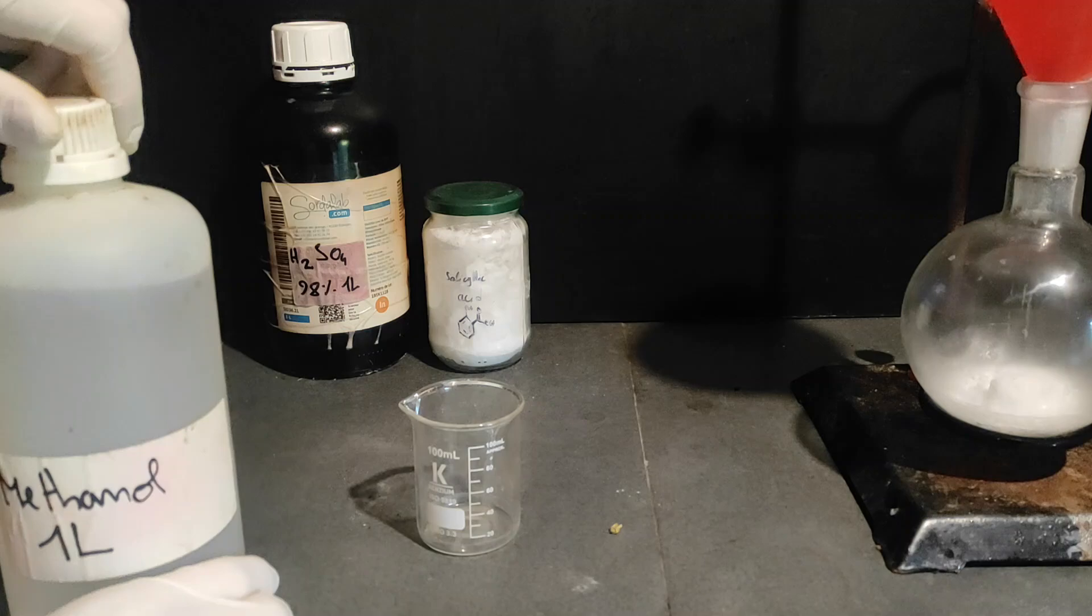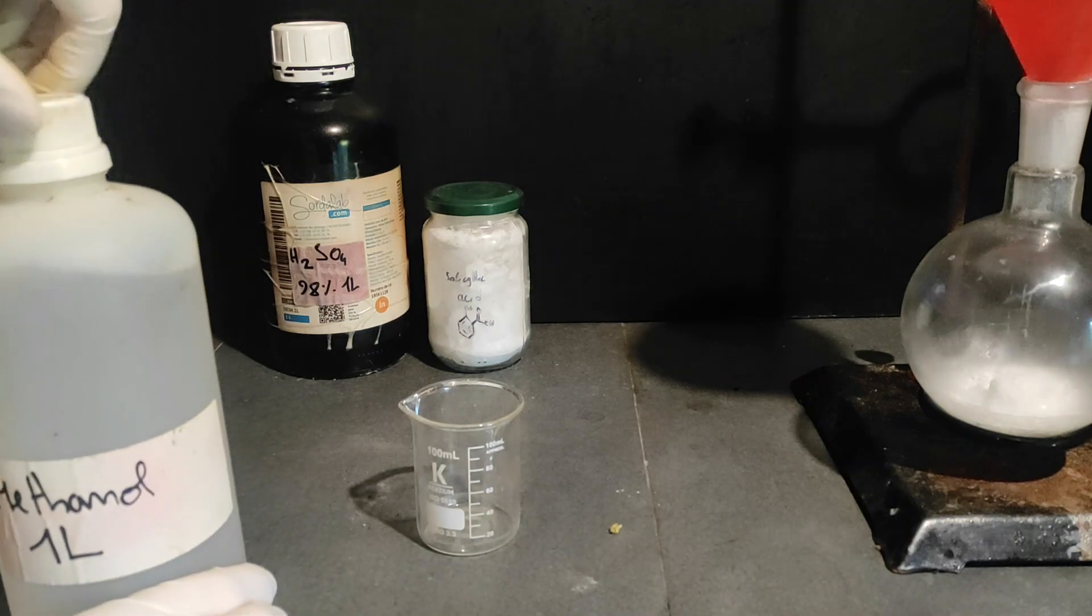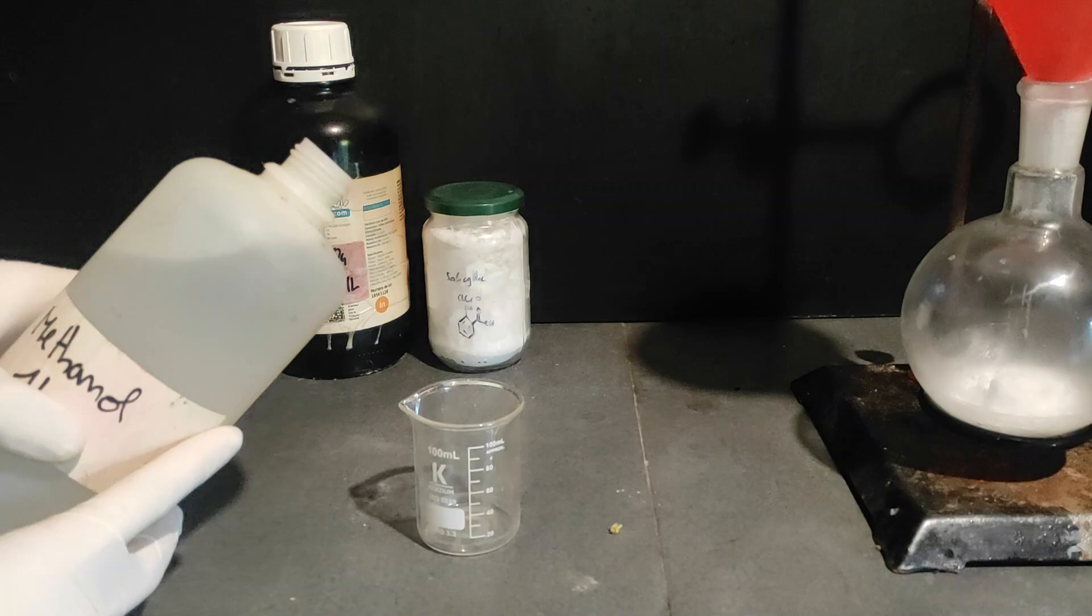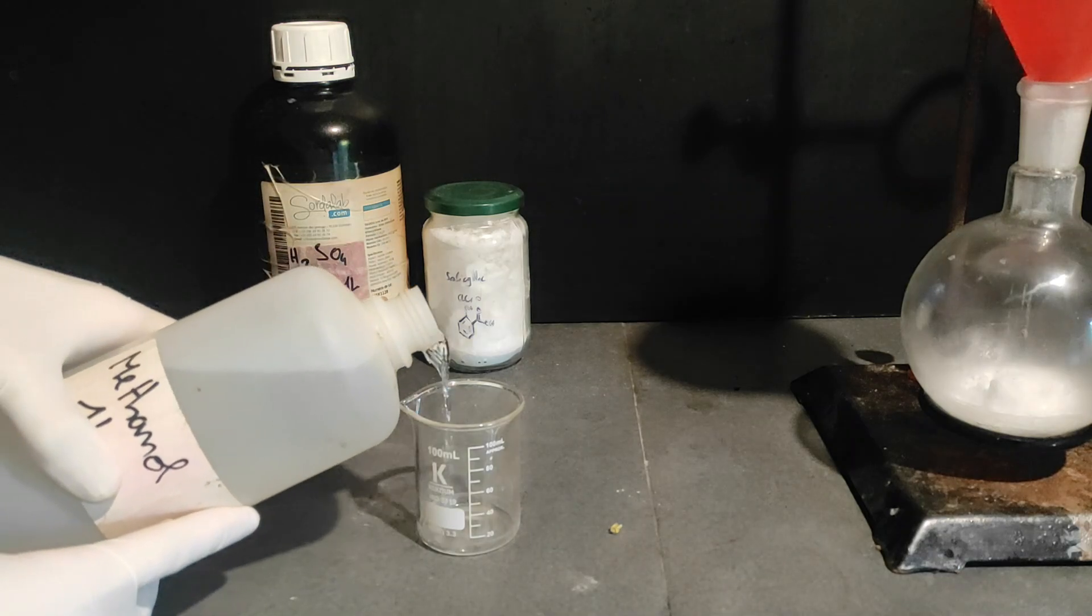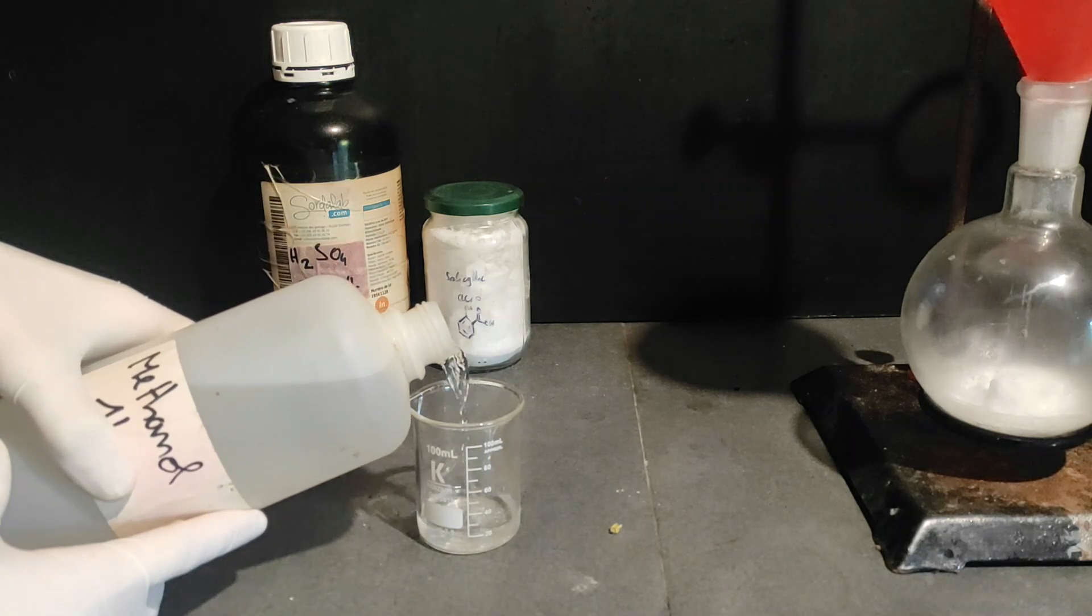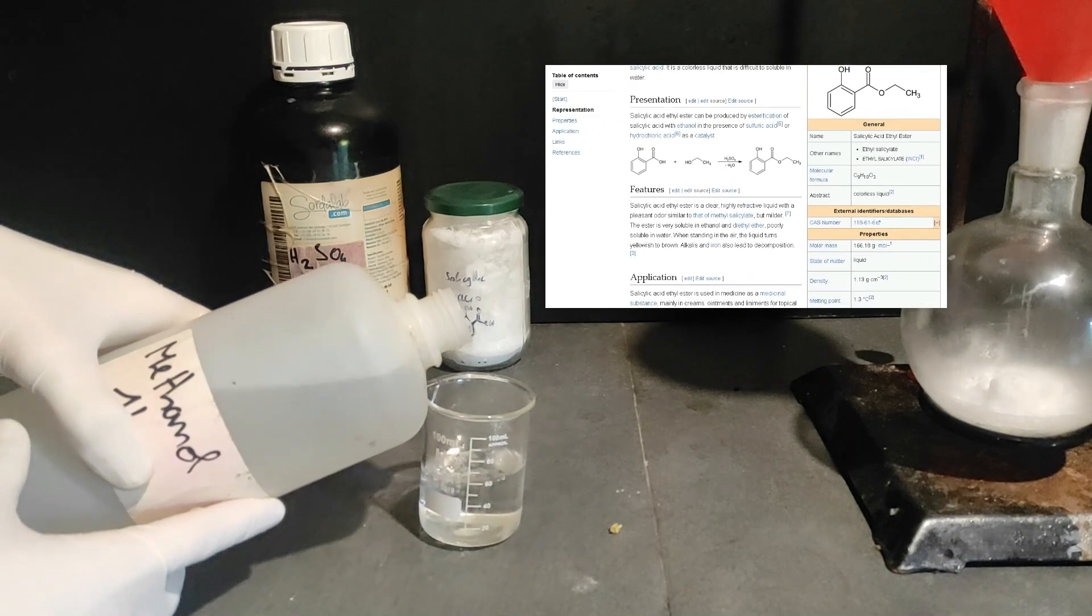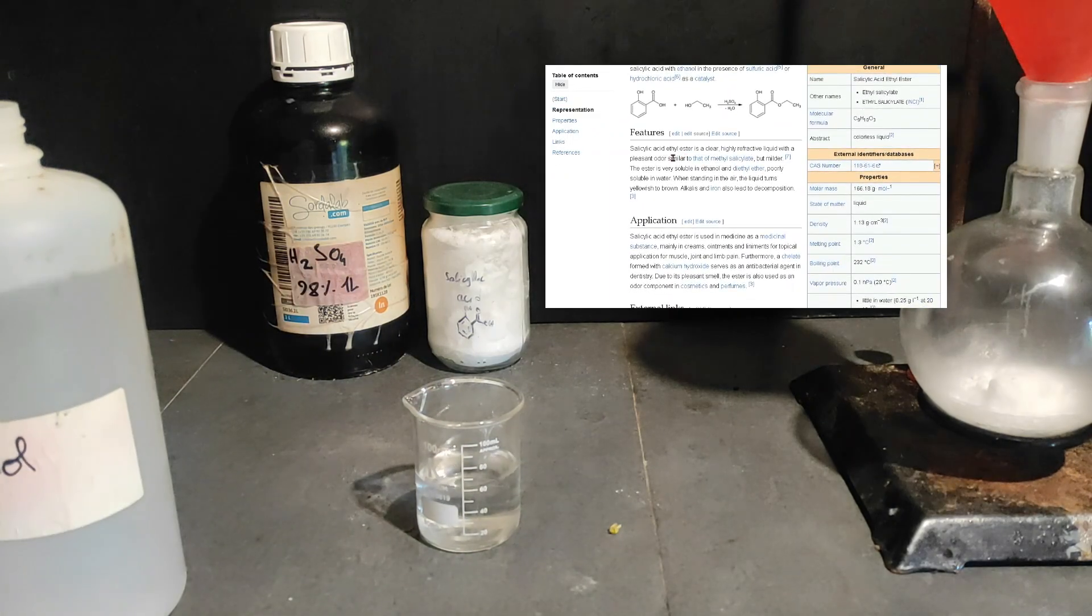Then we take a small beaker and measure 60 milliliters of second reagent which is dry methanol. If you don't have any methanol, you can also use some 90% or more ethanol to make a very similar ester called ethyl salicylate. According to Wikipedia, the smell is pretty similar, just make sure your ethanol is dry enough.